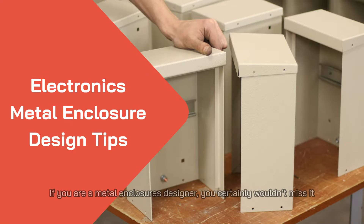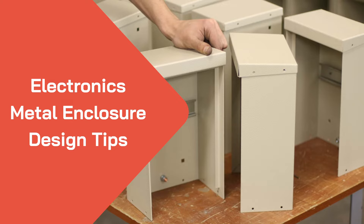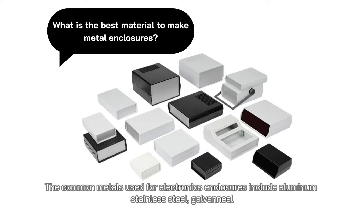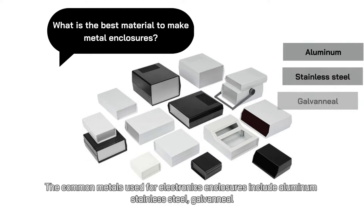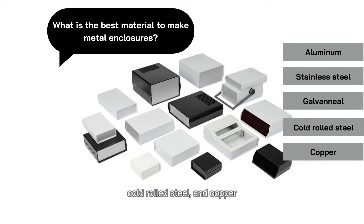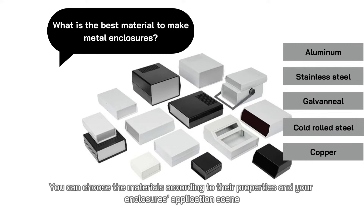Before starting a metal enclosure project, you need to choose the right material for it. What is the best material to make metal enclosures? The common metals used for electronics enclosures include aluminum, stainless steel, galvanial, cold-rolled steel, and copper. You can choose the materials according to the purpose of the enclosures.